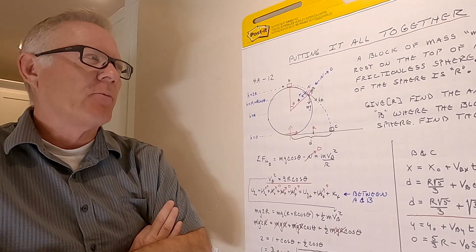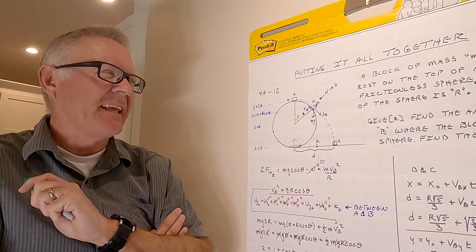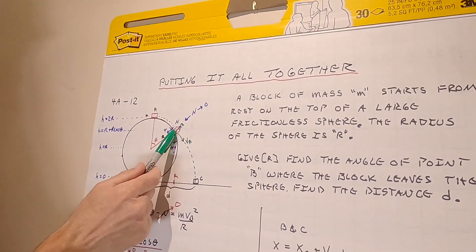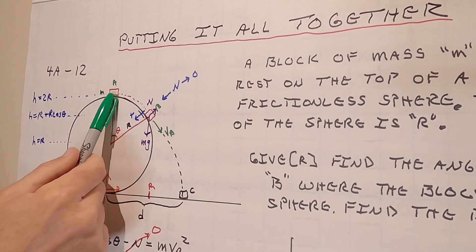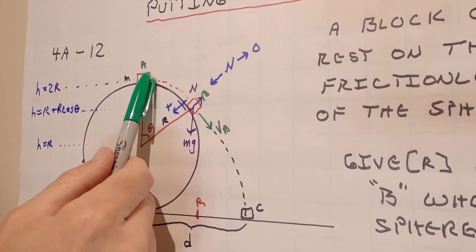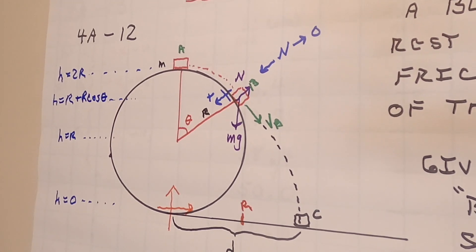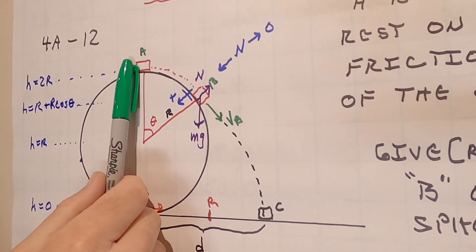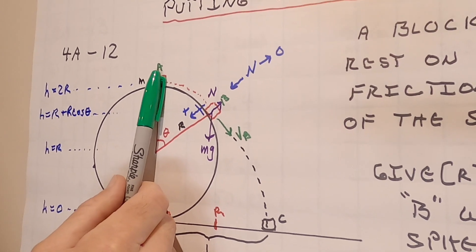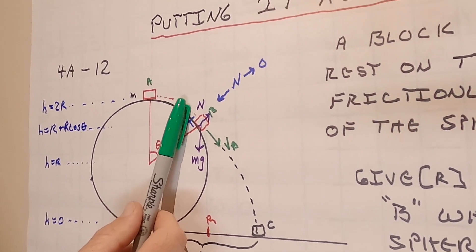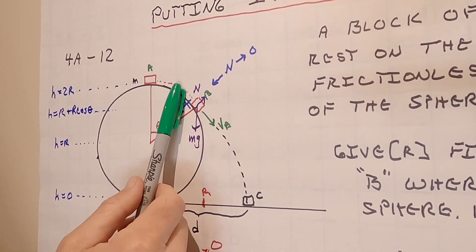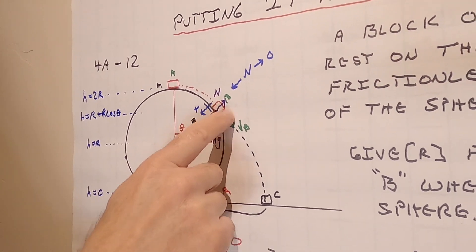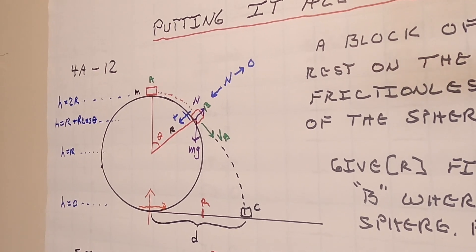Let's do a problem that puts a lot of concepts together. We have a giant sphere, and instead of a block, there's a skater — a person standing on roller skates who doesn't know how to skate very well. Someone gives him a slight infinitesimal tap and he starts to slide down the sphere. Since he's on perfect roller skates there's no friction, and there's going to be a point where he leaves the sphere.